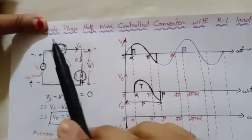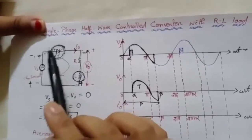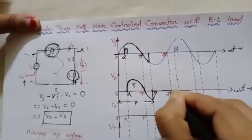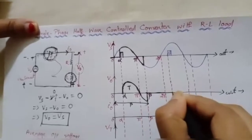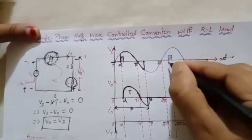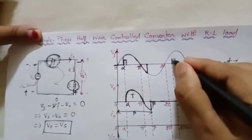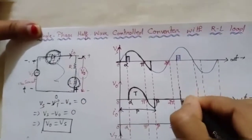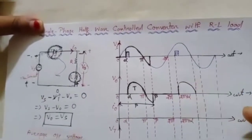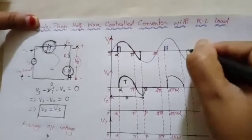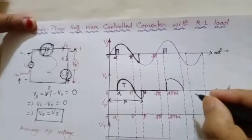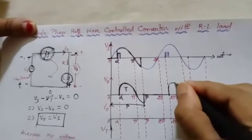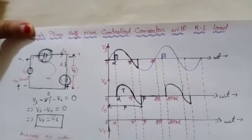At beta, the inductor has released all its energy and the source is in the negative half cycle, so the thyristor turns off. From beta, the output voltage is zero until the next gate pulse at 2π + alpha. At 2π + alpha the supply voltage is again positive, the thyristor turns on again, and we get the same output voltage waveform repeated — including the negative portion due to the inductor releasing energy.